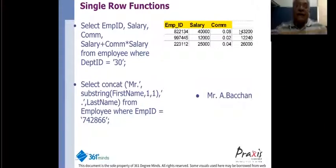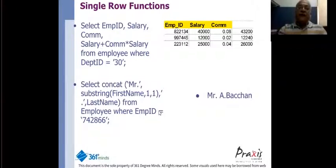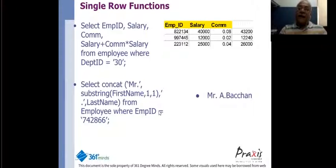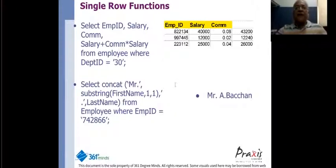This is an example of a numeric function. We can also do something like a string function, where we work with a name, which is a string, and do some operations with it — for example, representing the first name as just a single letter. This is also called a single row function.